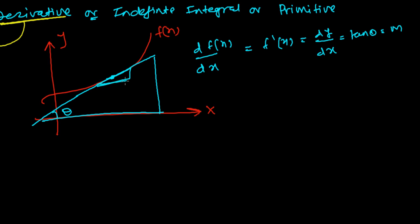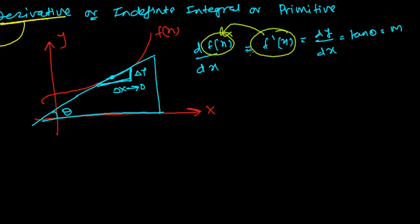The slope at that point — let's call the angle theta — so the derivative dy/dx equals f'(x) equals tan(theta). It's just the rate of change of the function at a particular point when delta-x tends to an infinitely small value, almost zero.